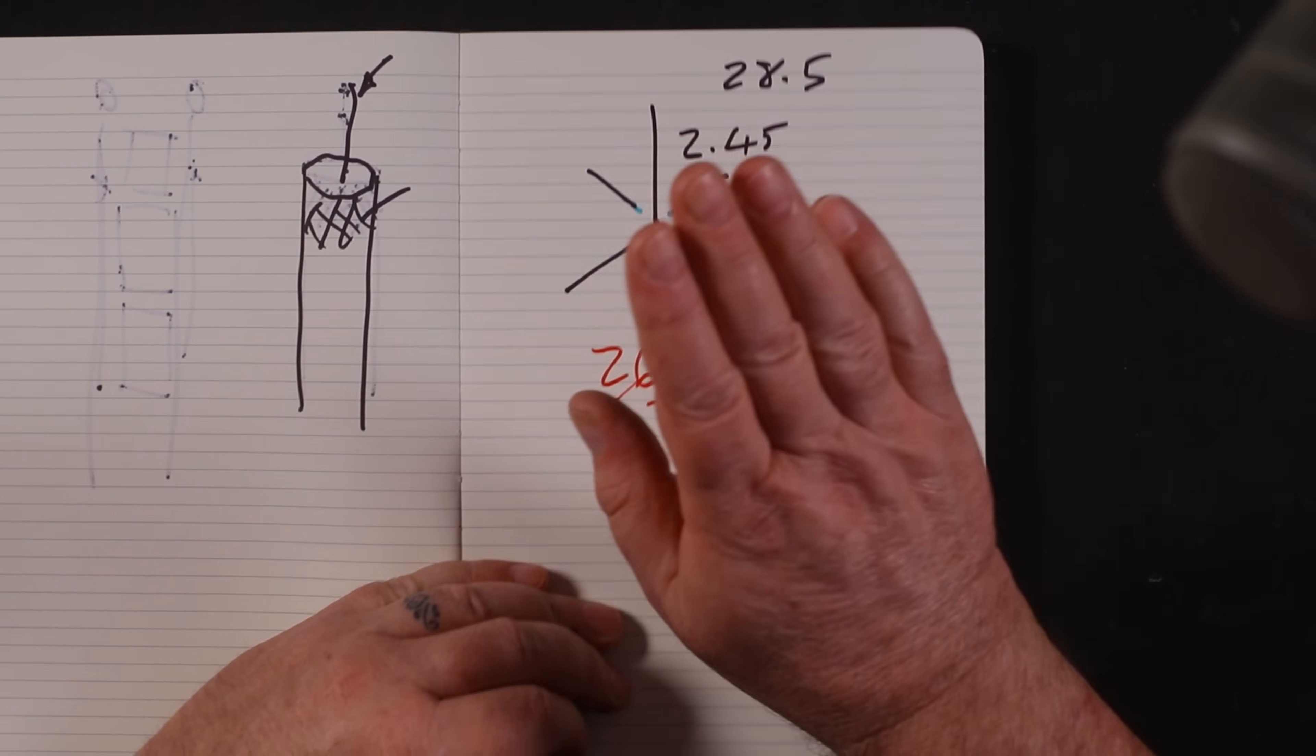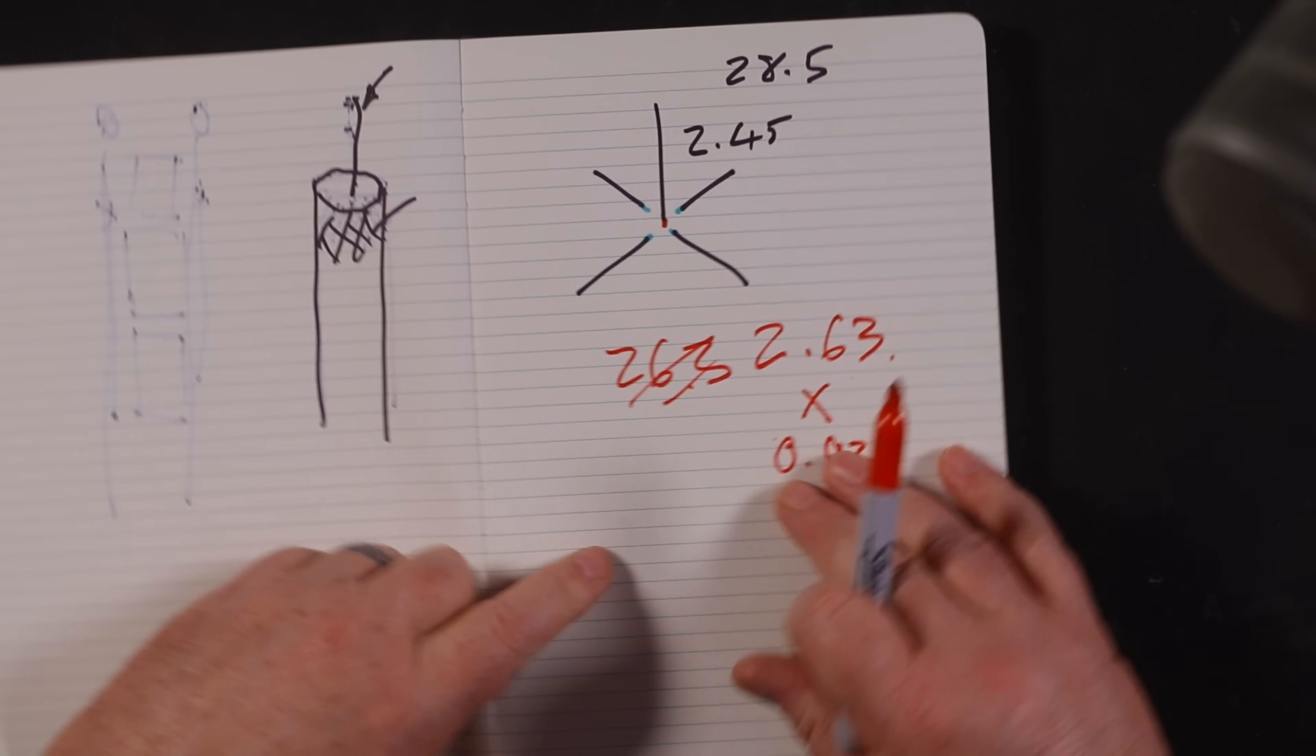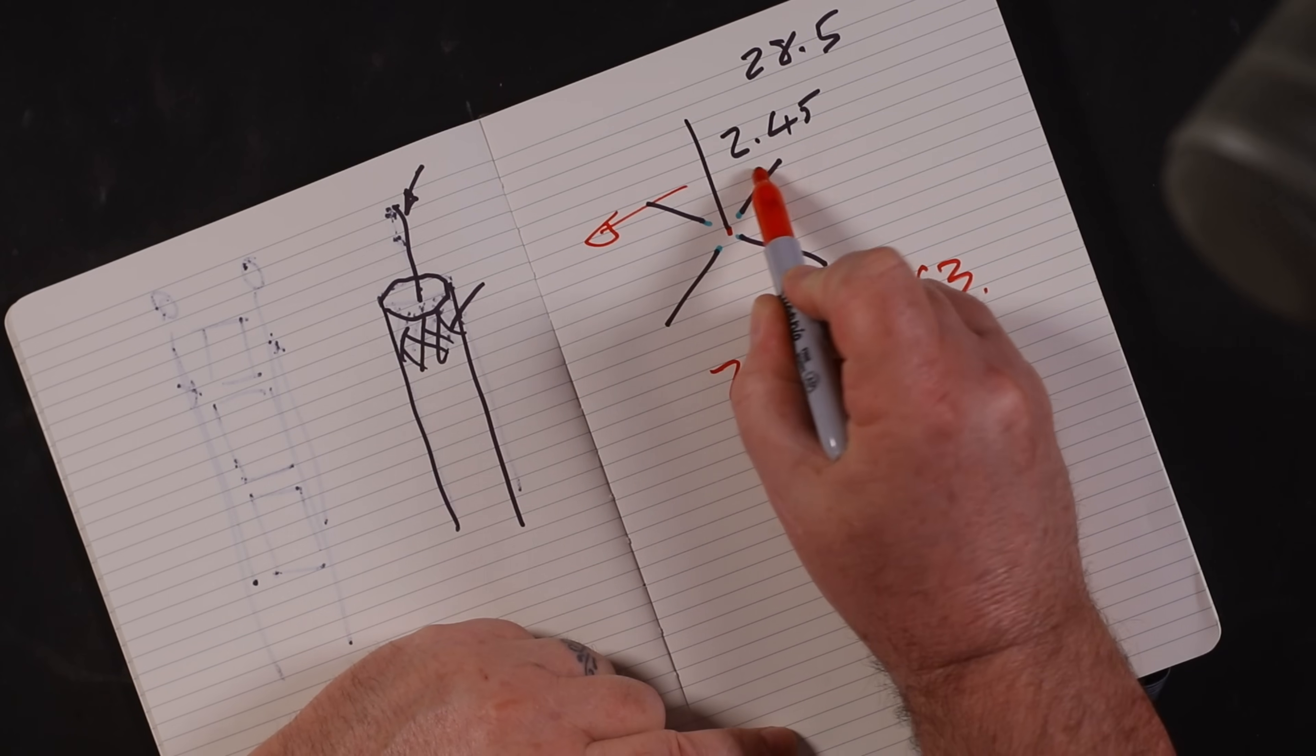So 2.45 would be approximately perfect for 28.5 megahertz. So that's the ground plane. What would happen is your RF technically would go out this way and this way, perpendicular to the vertical.